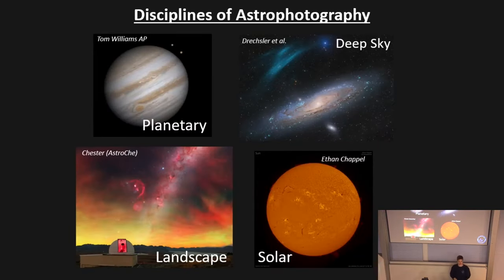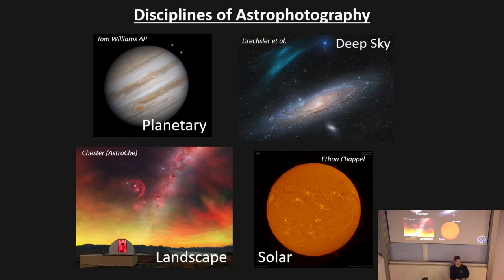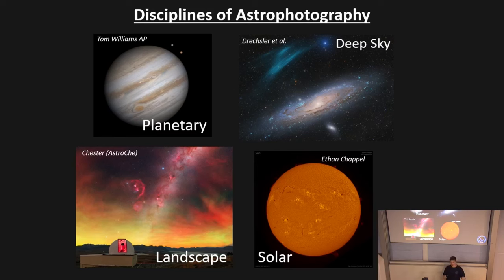Astrophotography is an umbrella term split into probably four different disciplines. You've got planetary, which is not just planets — it's basically anything inside the solar system that's not the sun: Jupiter, Saturn, Mars, the moon, comets, asteroids. All of these disciplines have very different requirements in terms of processing, equipment, and technique.